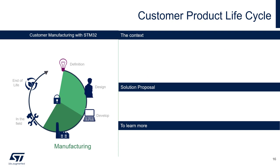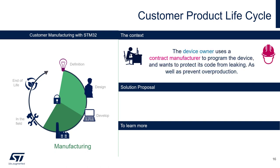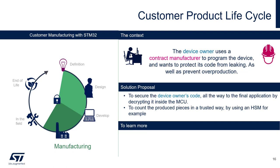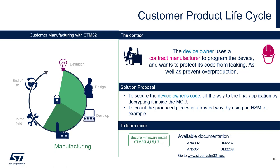How to address security during manufacturing: the device owner often uses a contract manufacturer to program the device, but wants to protect their code from leaking and prevent overproduction. To avoid any leaking of your code, a mechanism is to encrypt your firmware and ensure it is decrypted inside the MCU at the first flash. For overproduction, you should count produced pieces in a trusted way, using an HSM for example. We propose the secure firmware install mechanism for this — you can find documentation on our site detailing how it preserves code confidentiality and prevents overproduction.